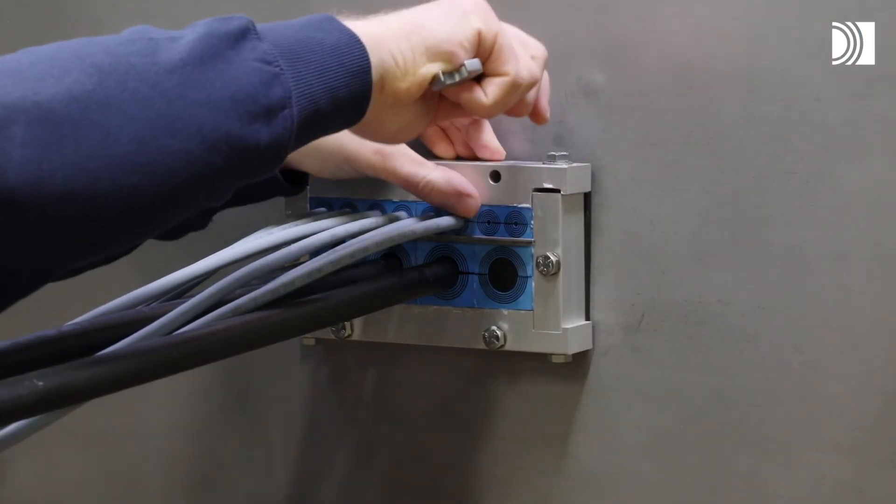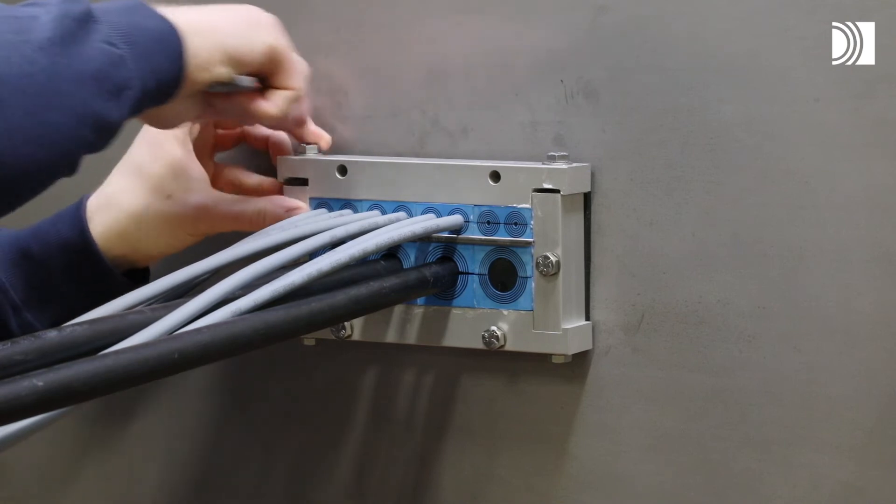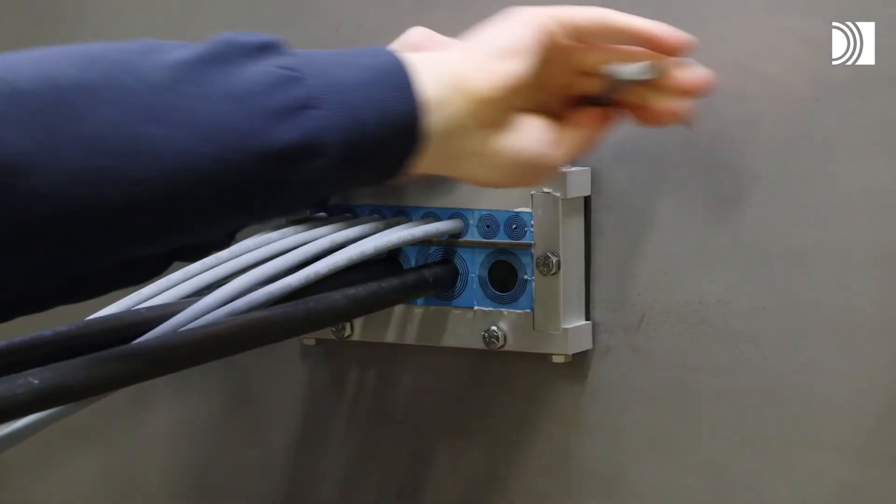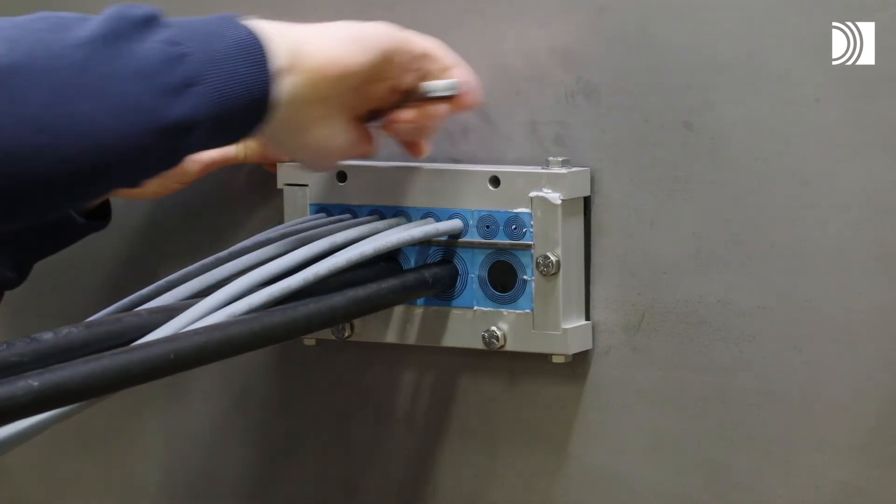Tighten the two screws for the upper long part alternately to ensure an even compression. Protruding lubricant indicates a tight seal.